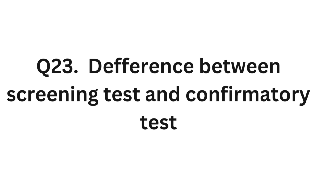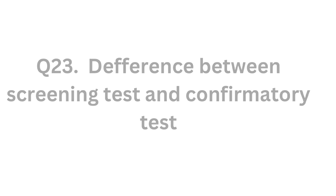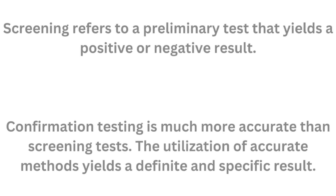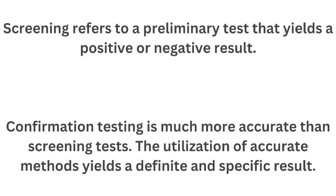Question number 23: What is the difference between a screening test and a confirmatory test? Screening refers to a preliminary test that gives a positive or negative result. Confirmation testing is much more accurate than a screening test; the utilization of accurate methods yields a definite and specific result.